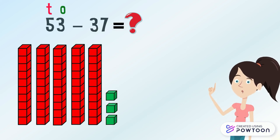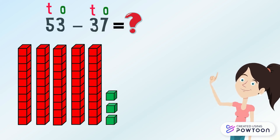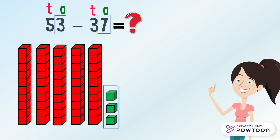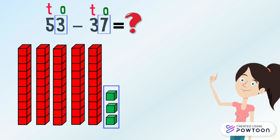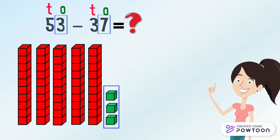In the number 37 there are three tens and seven ones. Just like with addition, we always start from the ones digit. We have three and seven. We want to take away seven ones from three ones. It is impossible. So what should we do?